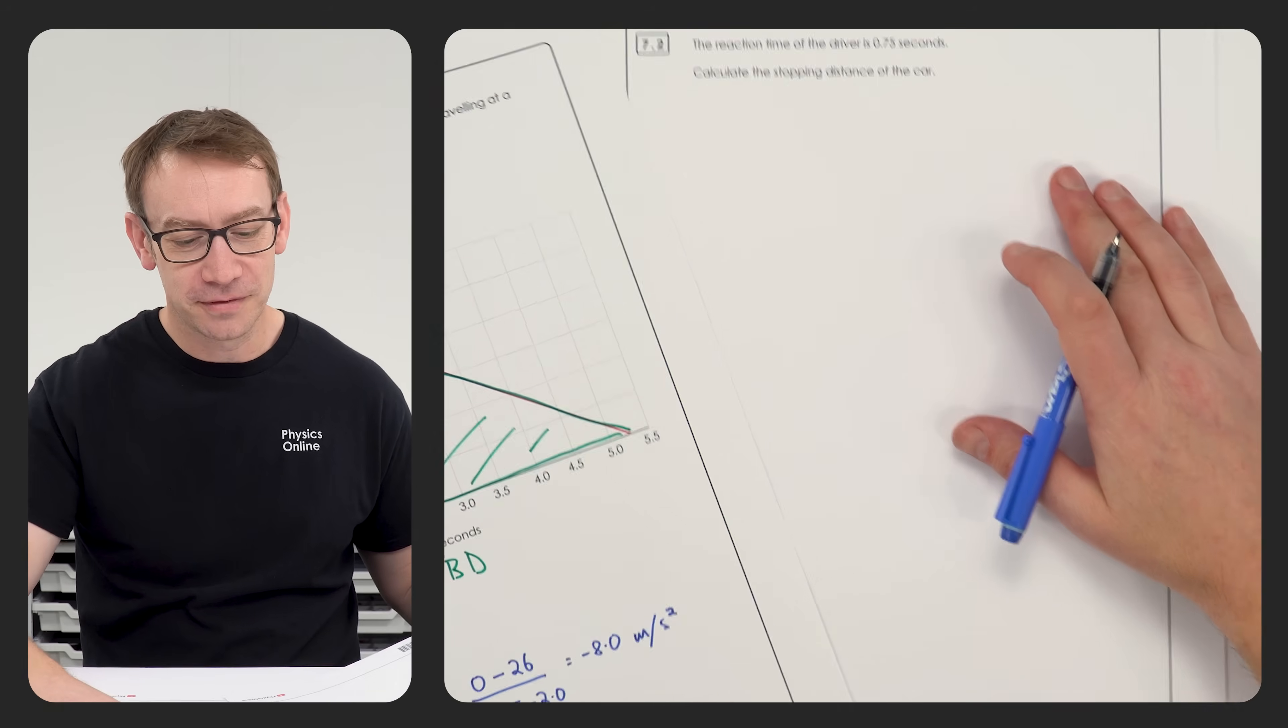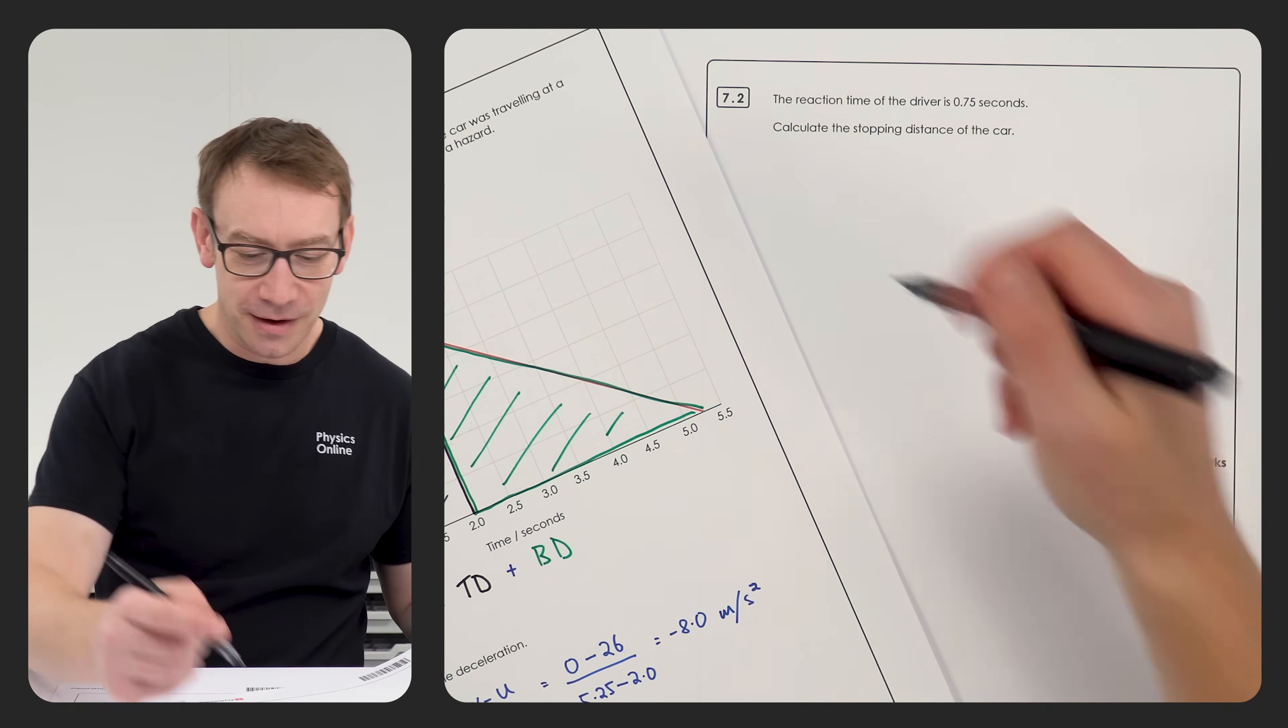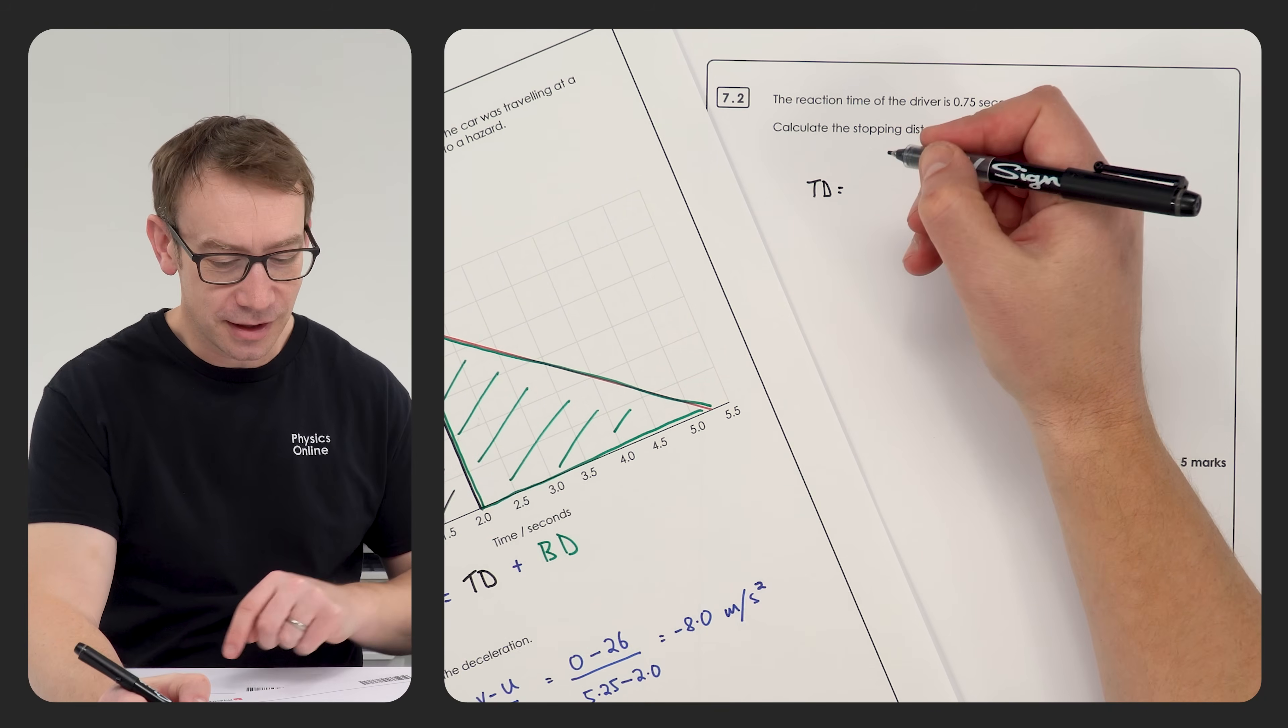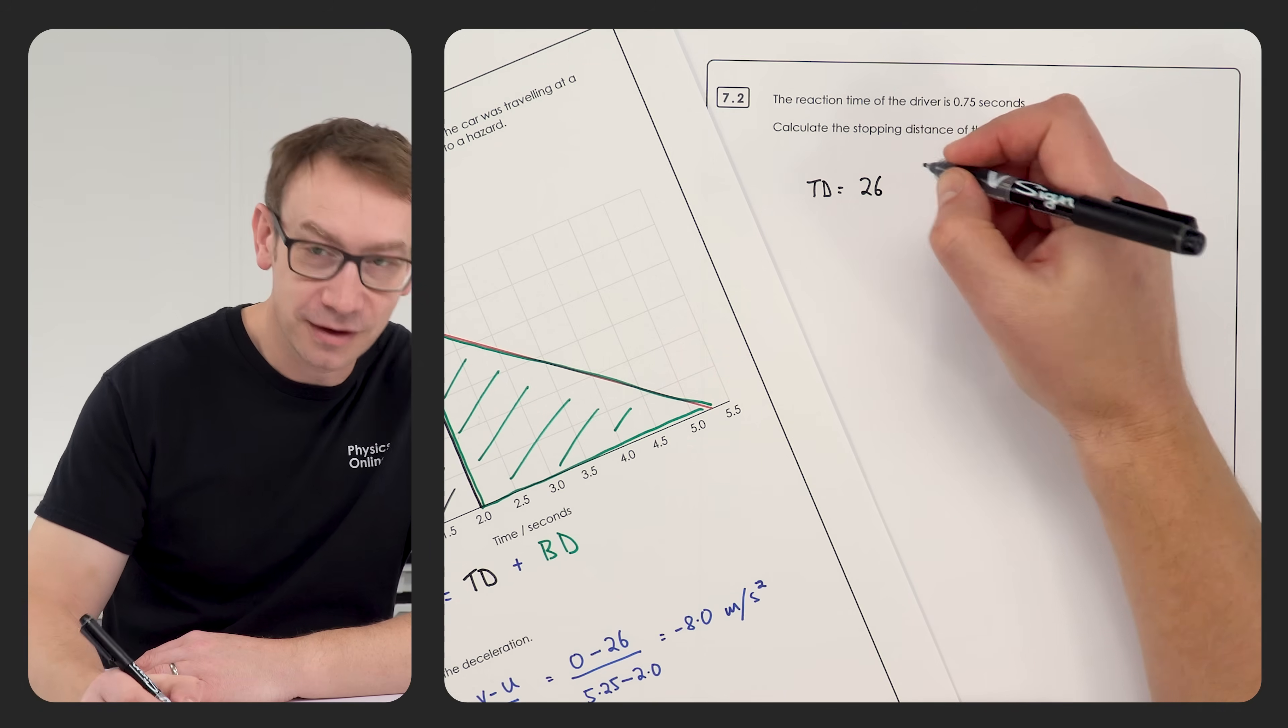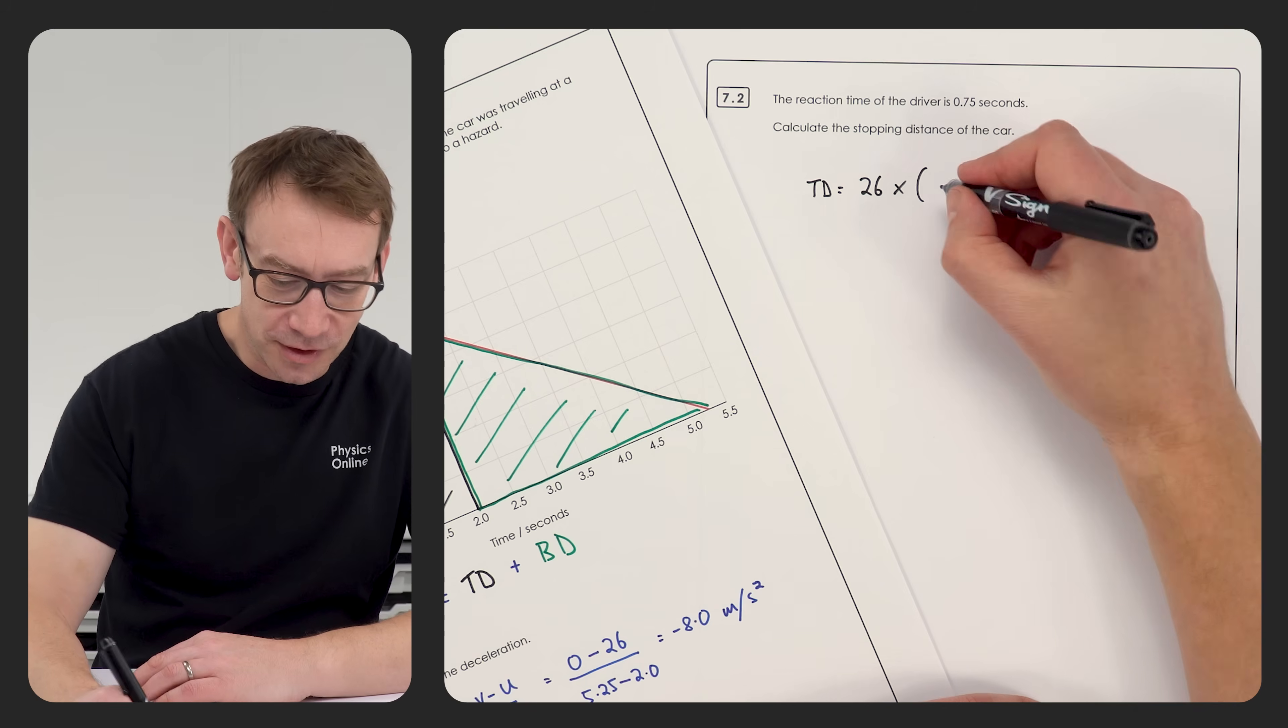Because we're going to use this figure to help answer that. We're going to calculate the stopping distance. So the thinking distance is just going to be this area here, and that's going to be equal to the height which is 26 multiplied by the distance here which is going to be the same as 2.0 minus 1.25, or that 0.75 of a second.